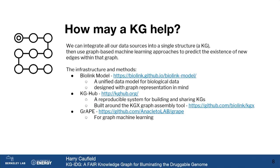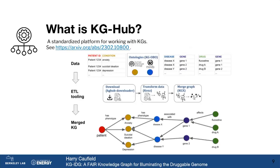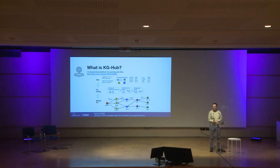We also use a tool called Grape for graph machine learning, and I'll demonstrate some of that shortly. KGHub is really one of the core pieces of infrastructure that we need to ensure a knowledge graph like this is FAIR.